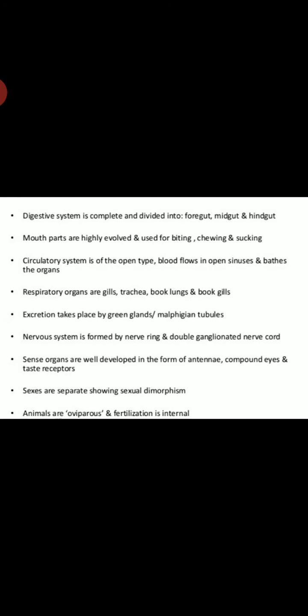Digestive system is complete and divided into foregut, midgut and hindgut. Mouth parts are highly evolved and used for biting, chewing and sucking. Circulatory system is of open type. Blood flows in open sinuses and bathes the organs. Respiratory organs are gills, trachea, book lungs and book gills.